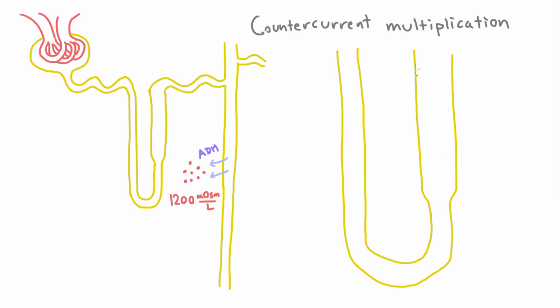So that's right here. So here at the thick ascending limb, the loop of Henle is pumping sodium out. And that leads to a higher concentration of sodium out here, outside of the tubules.